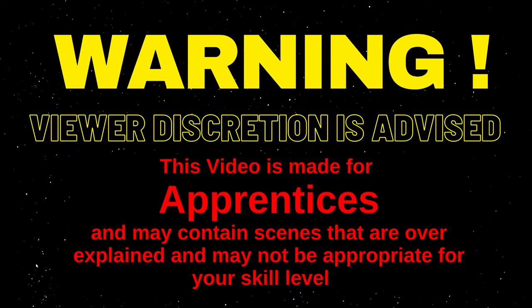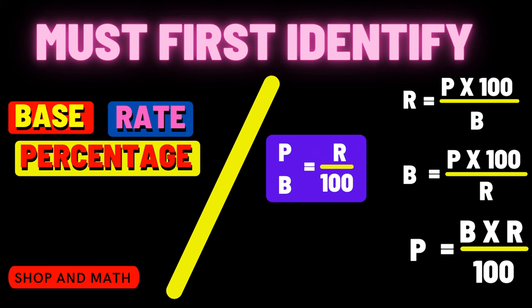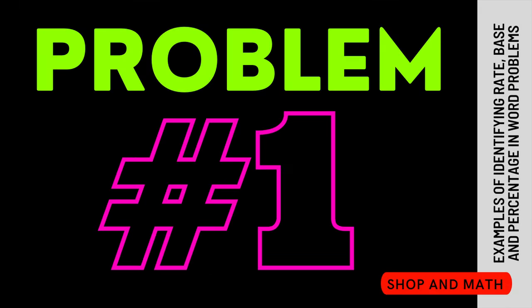This video is made for apprentices and may contain scenes that are over-explained and may not be appropriate for your skill level. The first step we're going to take in all of our problems is identifying the rate, the base, and the percentage. Then we will transfer them over into an equation and solve the equation. This is the first of three problems that we're going to solve.